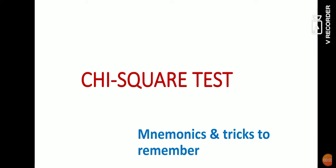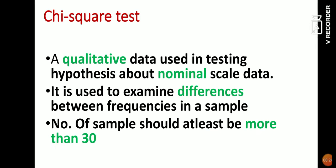Hello guys, today I'll be discussing chi-square test while giving you some mnemonics and tricks to remember it. Chi-square test is a very boring and uninteresting topic for doctors since we are not mathematicians or statistical analyzers. Chi-square test is a qualitative data used in testing hypothesis about nominal scale data, used to examine differences between frequencies in a sample. The sample number should be at least more than 30.